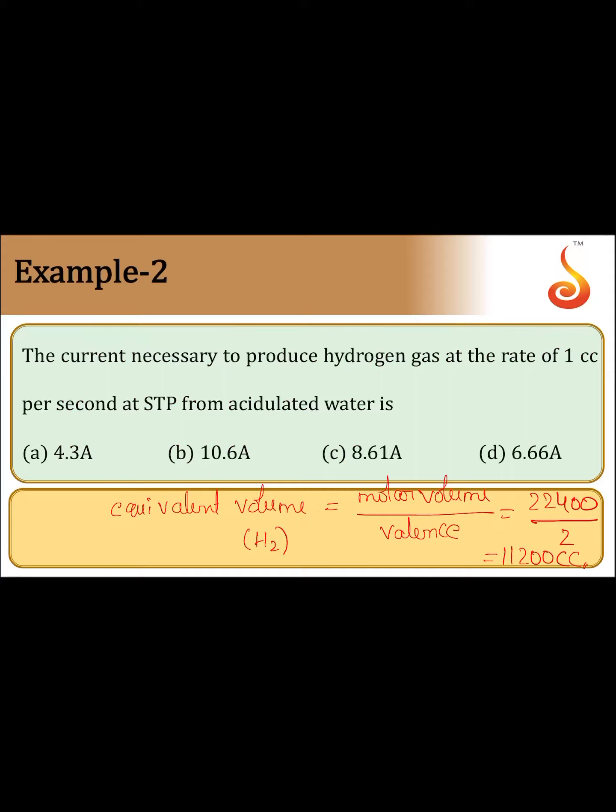So the current necessary to produce hydrogen gas at the rate of 1 cc per second at STP from acidulated water is 8.61 amperes.